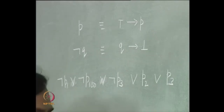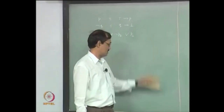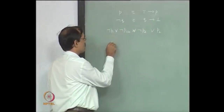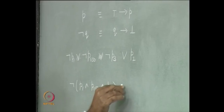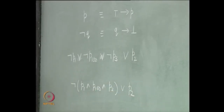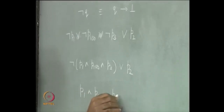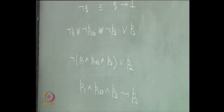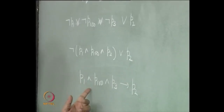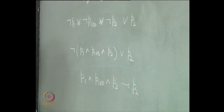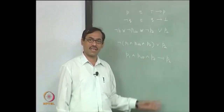We have to define a Horn clause in a way that top and bottom are also included. In general, because of De Morgan's, not P1 and P100 and P3 or P2 is equivalent to P1 and P100 and P3 implies P2. This will be the general form of a Horn clause: you have ANDs of propositional variables without negation, then an implication sign, then another propositional variable. But in general, we want top and bottom also, so they can be atomic propositions.